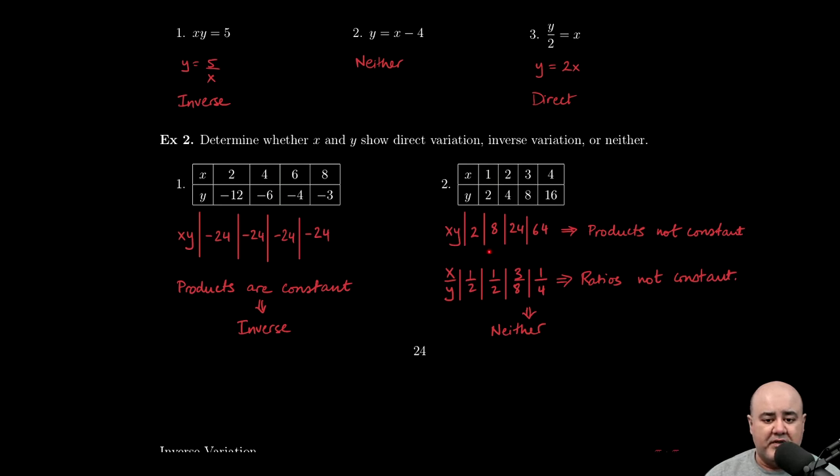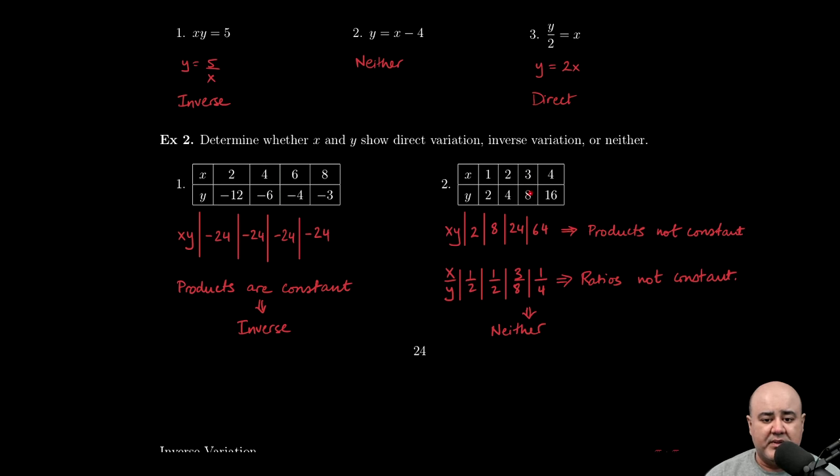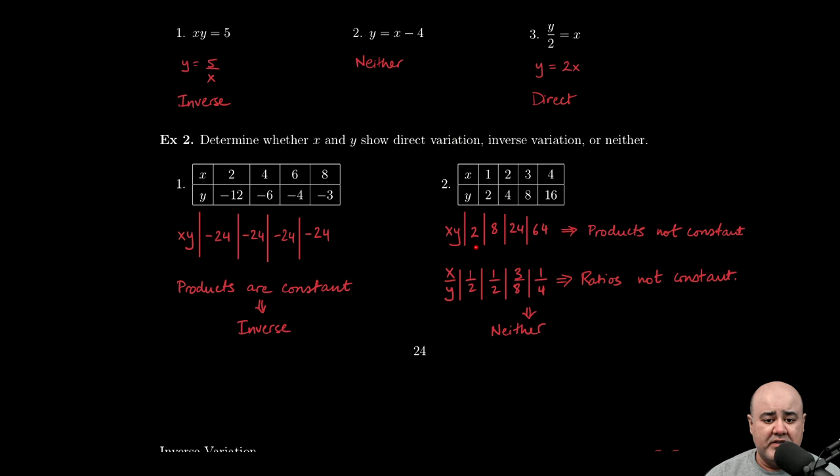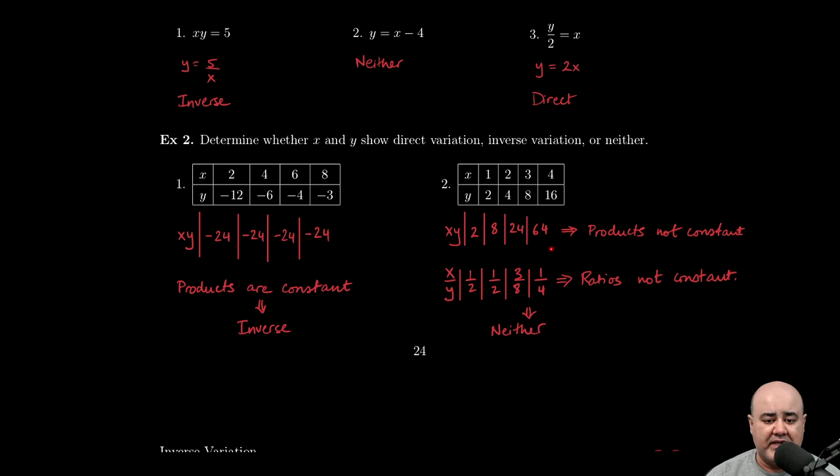So here, it's safer just to do it for all. But if they're not constant, that's the only time you can truncate your work and say, okay, I don't have to do these two because these two already don't match. But 3 times 8 is 24. 4 times 16 is 64. So there's no way that these constants are all the same. Therefore, we say that we do not have inverse variation.